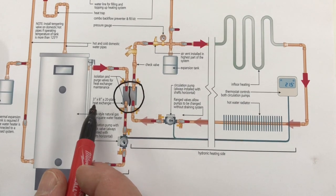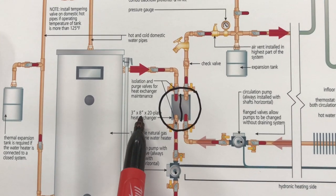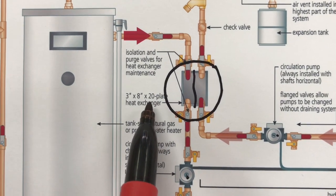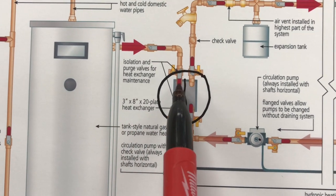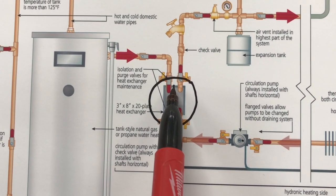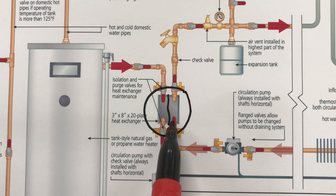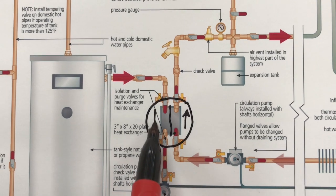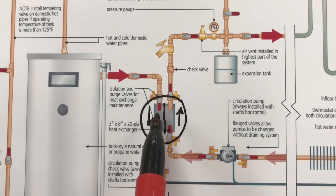Now a typical heat exchanger like this, a flat plate style, works really well. Three by eight inches with about 20 plates I find sufficient for most houses where I live in the fairly cold part of Canada. The hot water from the tank heats this side of the exchanger and the water from the heating system picks up that heat from the other side. You'll notice that the flow of water runs opposite to the flow through the other side of the exchanger. That's the way you get the most heat exchange.